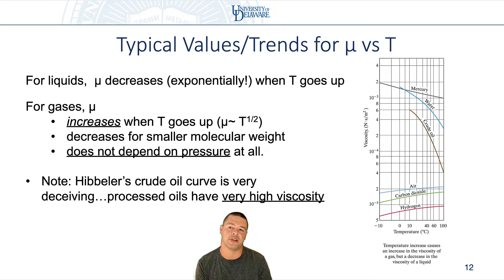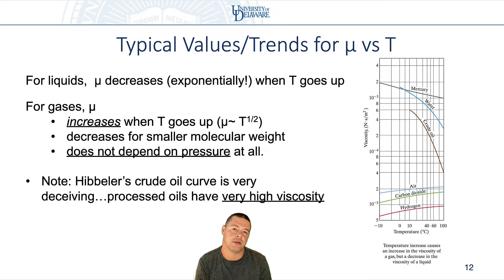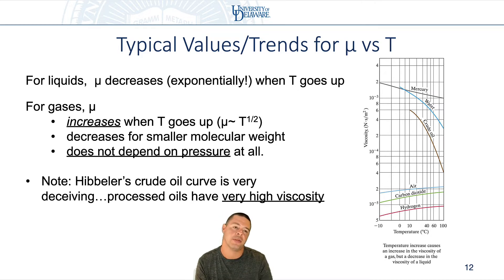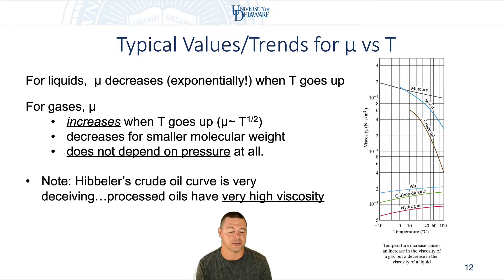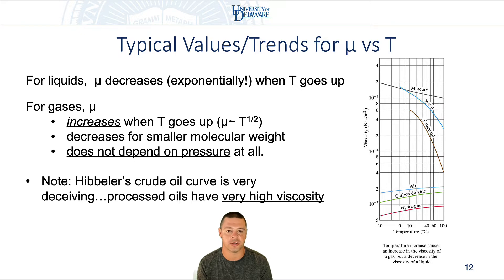With liquids, you probably have experience with really viscous materials like oils. When you raise the temperature of a fluid, it actually flows more easily. Think of honey or syrup — it barely flows, but if you heat it up it flows much more easily. It turns out that for liquids, viscosity decreases exponentially as you raise the temperature. So heating up a very viscous substance is usually a really good engineering move to make it flow.